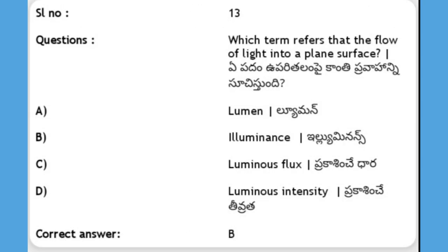Next, which term refers to the flow of light onto a plane surface? Options: A) lumen, B) illuminance, C) luminous flux, D) luminous intensity. The answer is B, illuminance. Illuminance is the flow of light onto a plane surface.